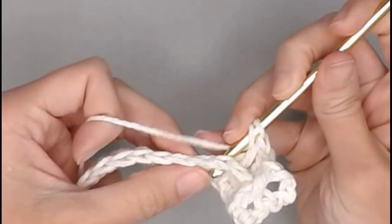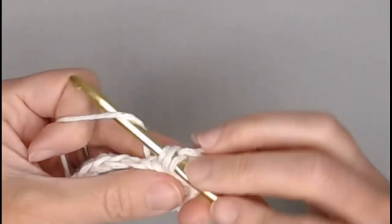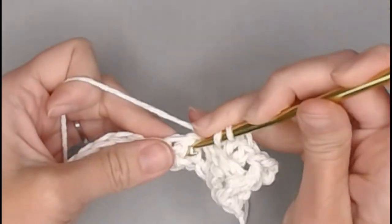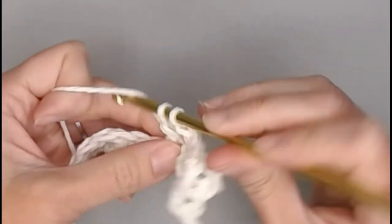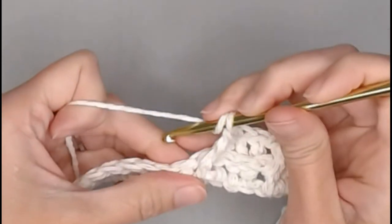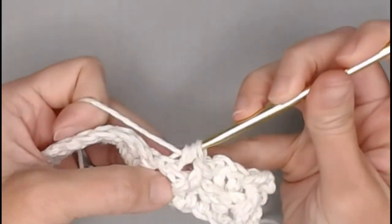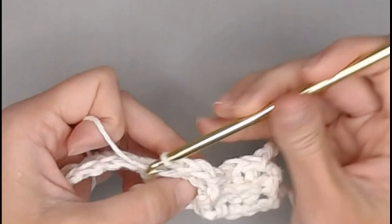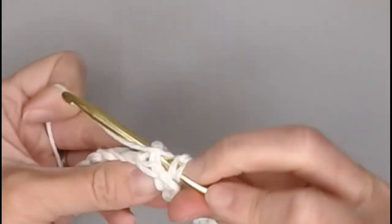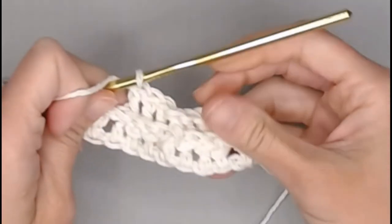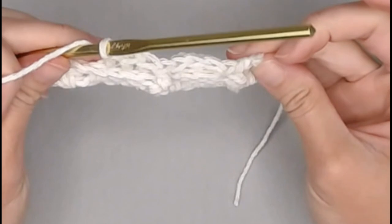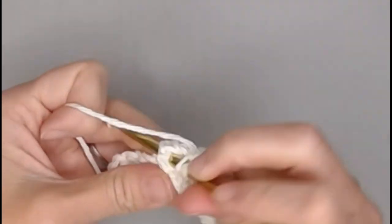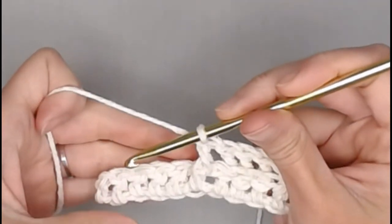One more back post for a total of three back post double crochet stitches. And then repeat. Next stitch we will front post double crochet. And three back post double crochets. And then repeat.